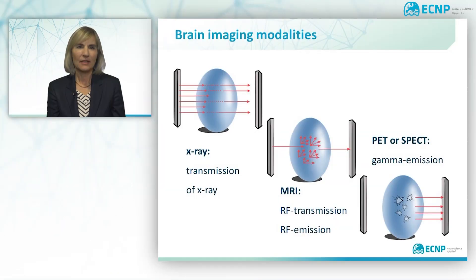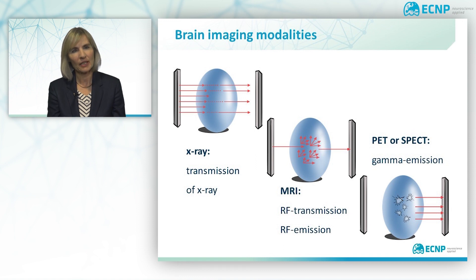Brain imaging is unprecedented to inform about the structure and the function of the brain. It can also show the regional content of specific molecules, receptors or enzymes. In this small course we will discuss how two of the most commonly used modalities for functional and molecular neuroimaging can be used for diagnosis in psychiatric and neurological disorders. You will also see examples of how one can objectively assess brain pathophysiology and drug effects.